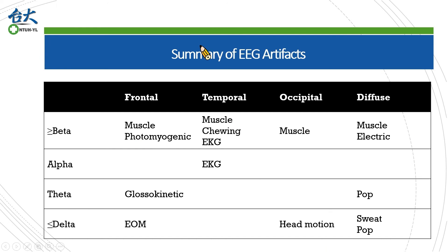Let's take a brief summary. The table was modulated from lessons on EEG normal variants and abnormal discharges. We divide artifacts by their frequency and location. Frequencies higher than beta waves usually originate from EMG, with location depending on which muscle is activating. EKG frequency ranges from beta to alpha, with regular intervals and maximal amplitude in the temporal region. Delta waves in the frontal region suggest gross kinetic waves, while delta waves elsewhere are usually eye movements. Electrode motion may produce artifacts in any location but is more common in the occipital region in long-term monitoring. Far slower artifacts may suggest sweating, especially when they look like a sausage.